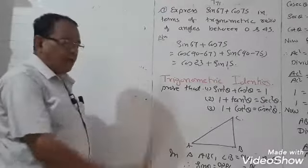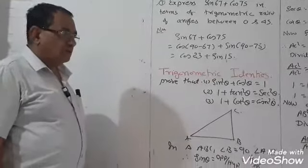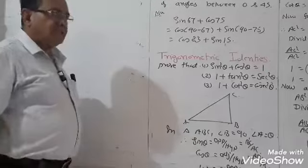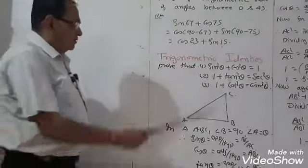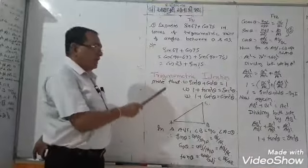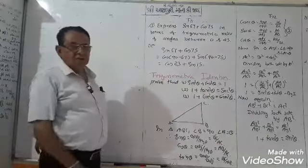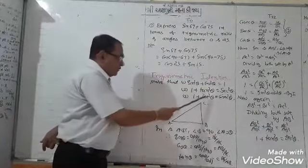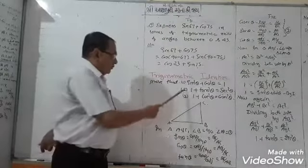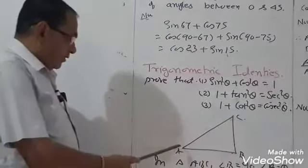Such types of examples are asked in the exam. Now, prove that sin²θ plus cos²θ is equal to 1. This identity also leads to: 1 plus tan²θ is equal to sec²θ, and 1 plus cot²θ is equal to cosec²θ.